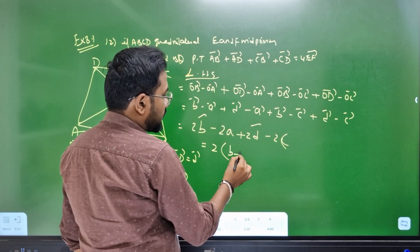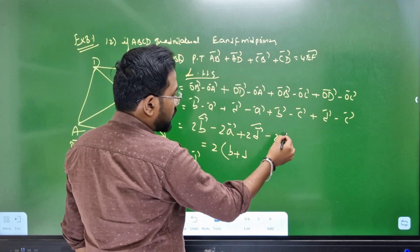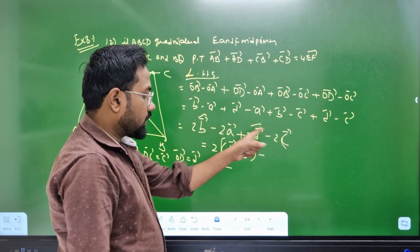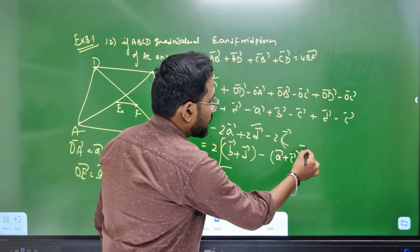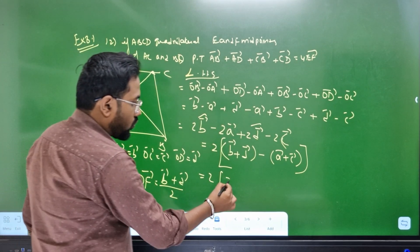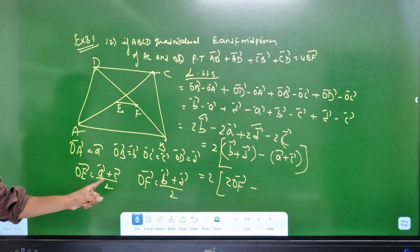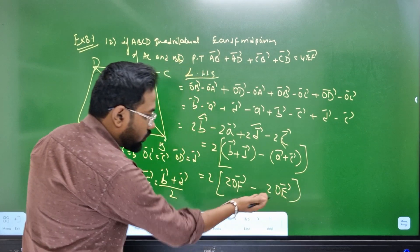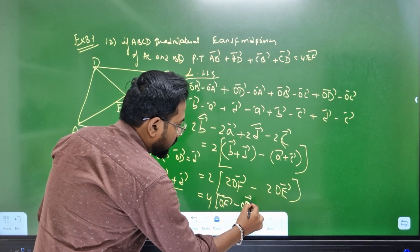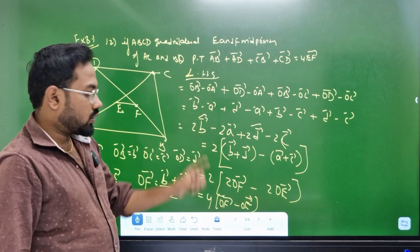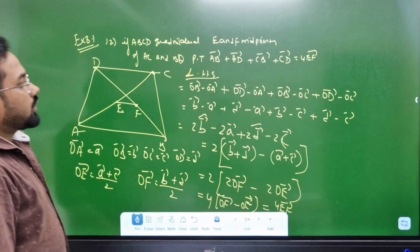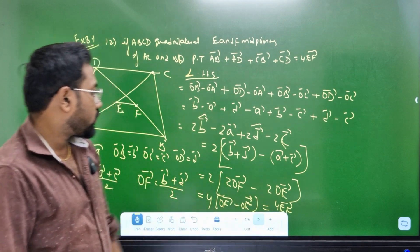First, B plus D vector. B plus D is equal to minus 2 minus terms, minus A vector plus C vector. Then 2B vector plus D vector is 2OF vector, minus A vector plus E vector is 2OE vector. 2OE vector is 4. Then the rest: OF vector minus OE vector. So, let's prove RHS.